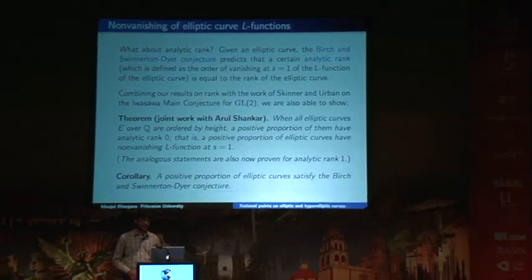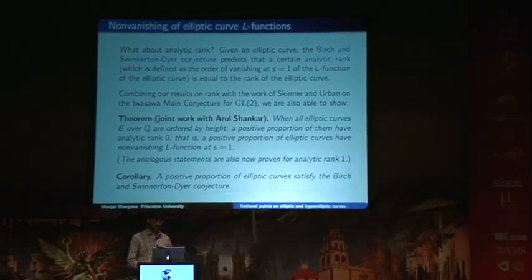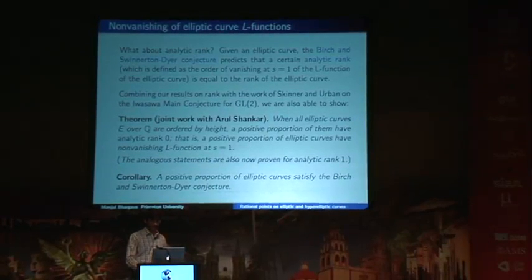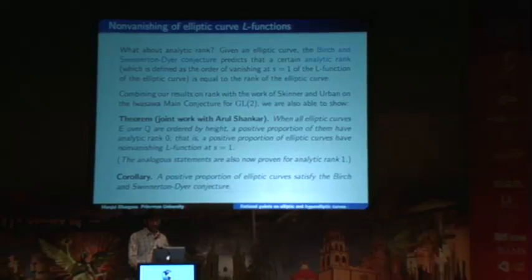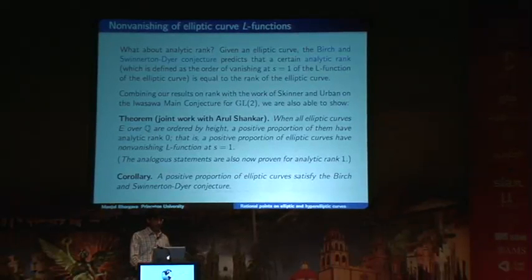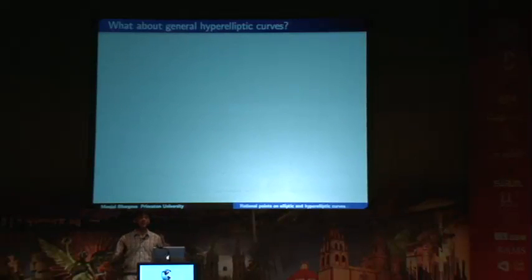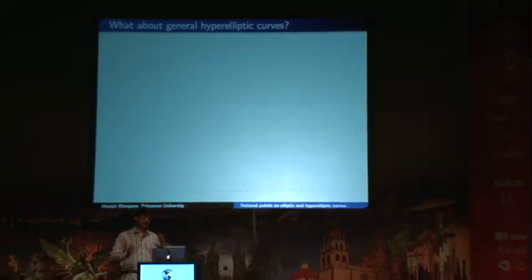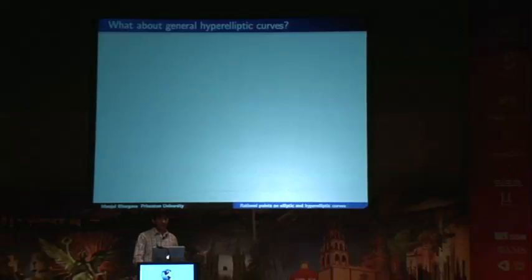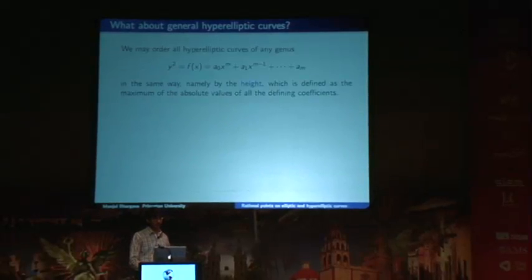Those are the consequences in the case of elliptic curves — we're able to establish many cases of the Birch–Swinnerton-Dyer conjecture. Now, what about general hyperelliptic curves? Right now we were looking at y² = cubic or y² = quartic polynomial in x. What about general hyperelliptic curves? In the same way, we may order all hyperelliptic curves by height.